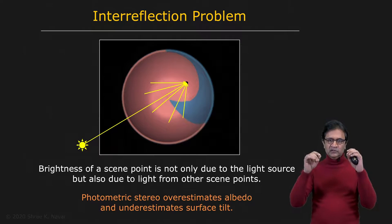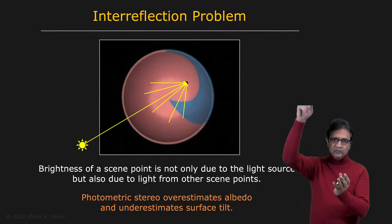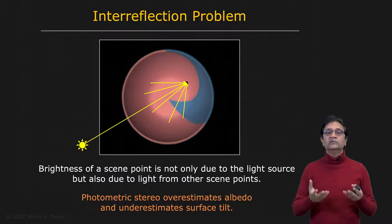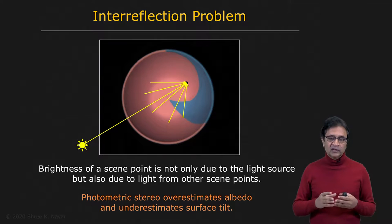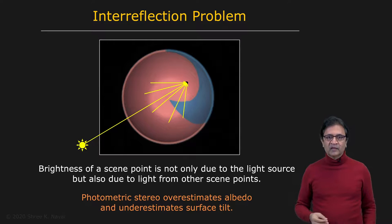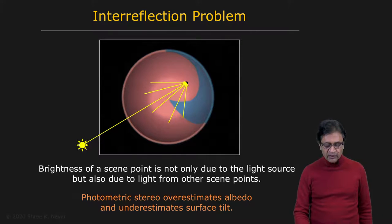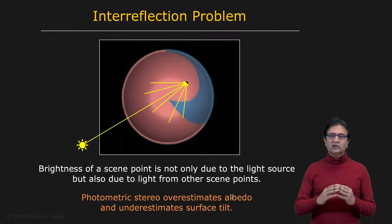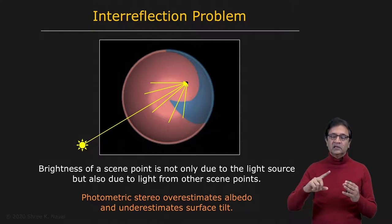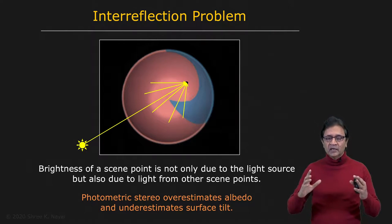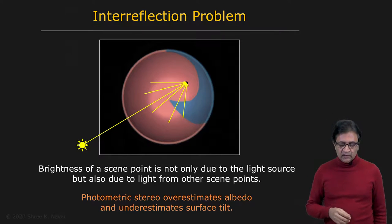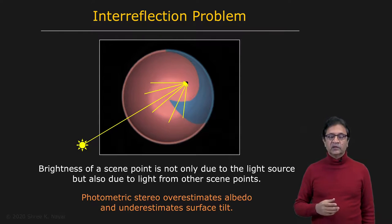As a result of this, when you apply photometric stereo to a concave object using, say, three point light sources, what tends to happen is that the albedo values you compute are going to be overestimated — higher than they should be. This makes sense because each point is reflecting more light than it would if it had only received light from the sources. So the albedos end up being overestimated. In addition, the tilt of the surface with respect to the sources also gets underestimated, meaning the reconstructed surfaces end up being shallower than their actual shapes. These are two effects that come from ignoring interreflections.